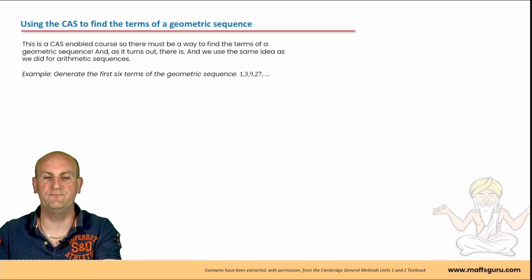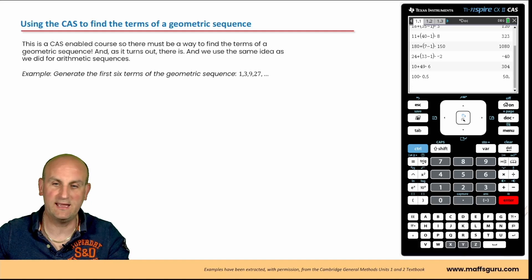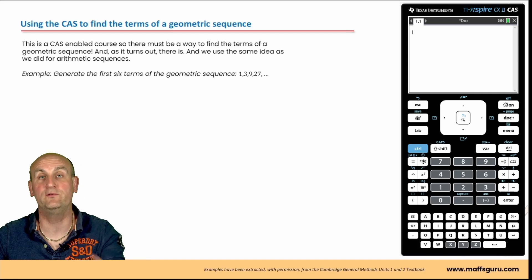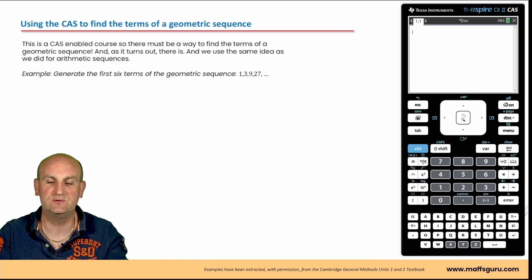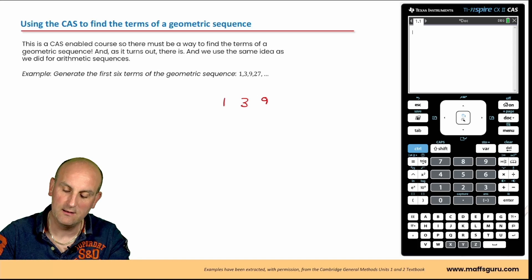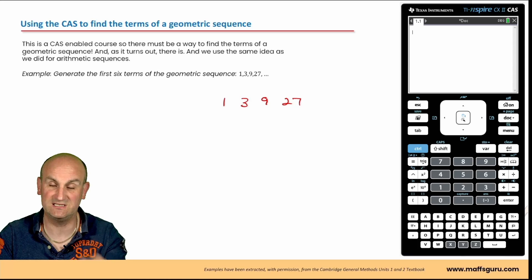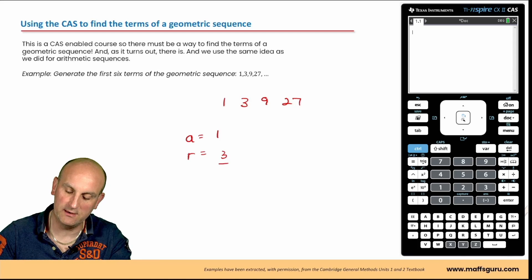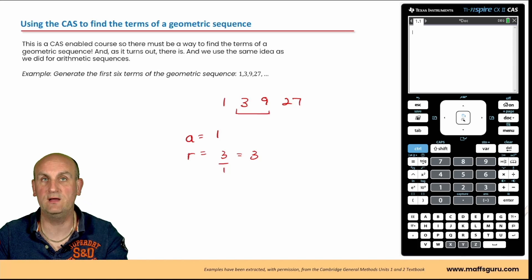We love being able to do this on the CAS. I'm using the TI-Nspire; for ClassPad the functionality is pretty much the same. To generate the first six terms of the geometric sequence 1, 3, 9, 27: my first term a equals 1, and my common ratio R equals 3 (since 3 divided by 1 is 3, and 9 divided by 3 is also 3). I'll multiply by 3 to go from term to term.